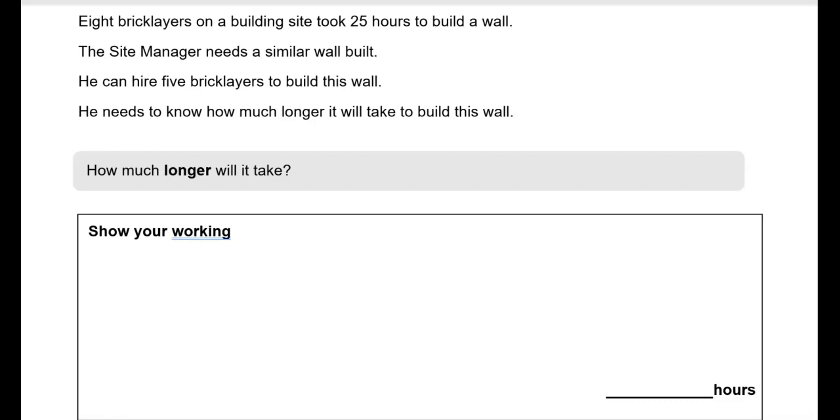Eight brick layers on a building site took 25 hours to build a wall. The site manager needs a similar wall built. He can hire five brick layers to build this wall. He needs to know how much longer it will take to build this wall. How much longer will it take? So let's write the ratio first. So it takes eight brick layers 25 hours. What about five brick layers? So we know that it's going to take them longer. And this is what we call inverse proportion. So we're reducing the number of brick layers, but we're increasing the number of hours.